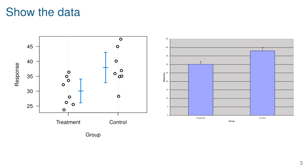As a first example, this plot shows a treatment group and a control group with eight measurements in each. On the left is a good example — we're showing all of the data, including the mean in each group and some measure of uncertainty around that mean. A common rendering in scientific publications just shows the mean and its uncertainty. When you have 50 or fewer data points per group, it's best to show the actual data rather than just the mean and confidence interval.